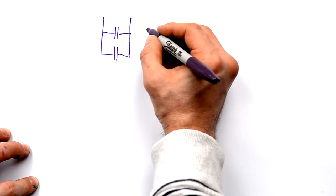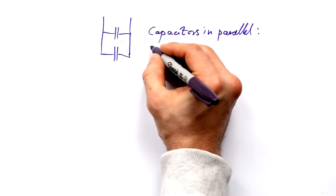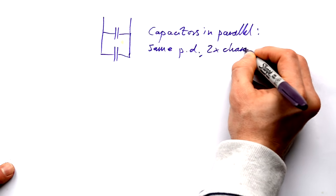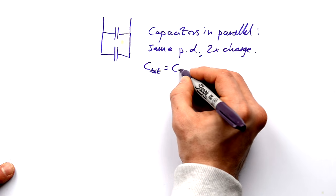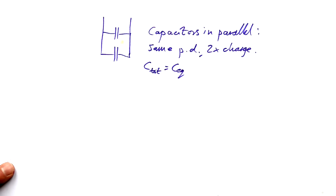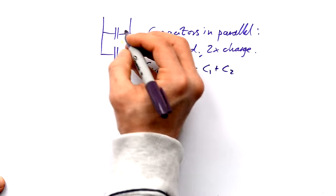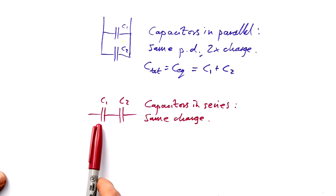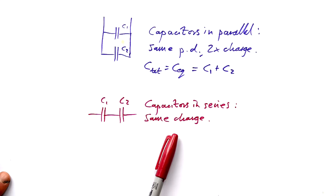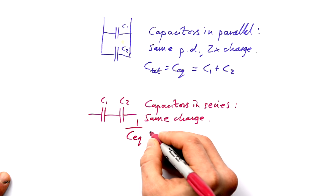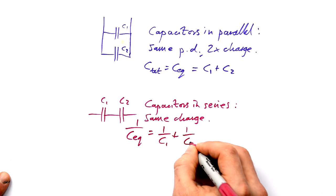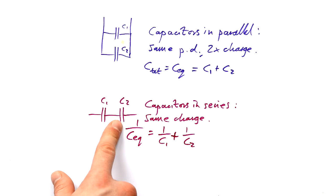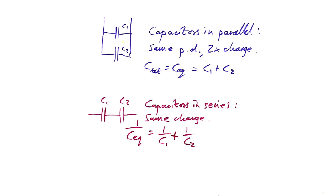For capacitors in parallel, the PD is the same across each one, but because we have two capacitors we can store more charge. The total (equivalent) capacitance is simply C_total = C₁ + C₂. For capacitors in series, the charge on each must be the same because of the isolated section of circuit in the middle. Voltage is shared between them. The equivalent capacitance follows 1/C_total = 1/C₁ + 1/C₂. Notice that capacitors have the opposite equations to resistors: capacitors in parallel add directly, while capacitors in series use the reciprocal formula — the reverse of resistors.